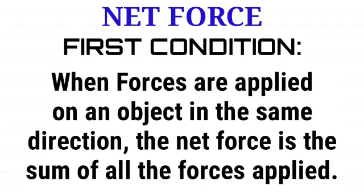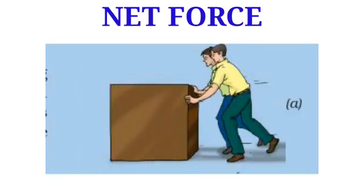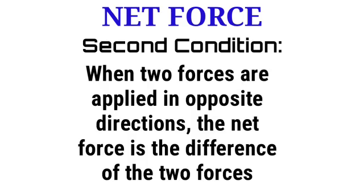Now we discuss about the net force or resultant force. We will discuss two conditions. First condition: when forces are applied on an object in the same direction. In this case, the resultant force is the sum of all the forces applied. For example, suppose two forces are applied on a table — in that case the table will move easily because the resultant force is the sum of the two applied forces. Let us understand with the help of a picture.